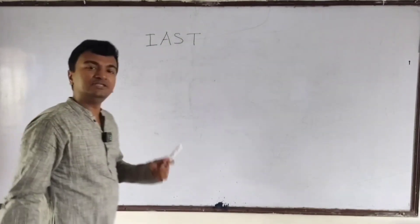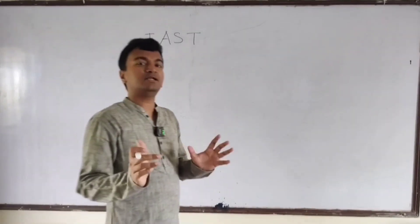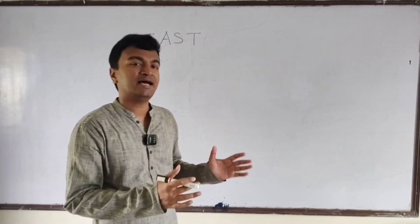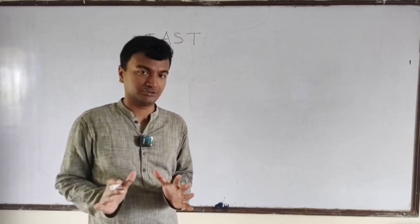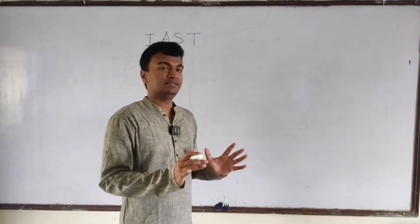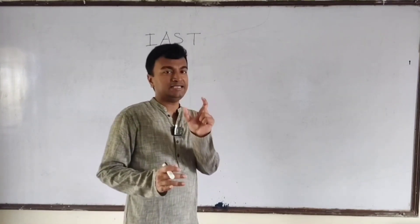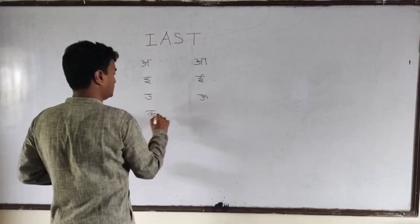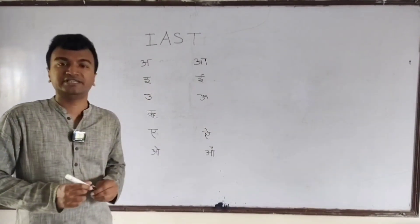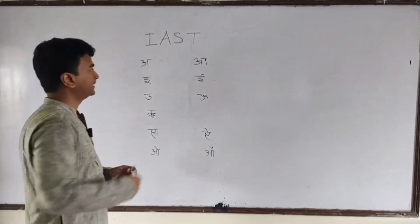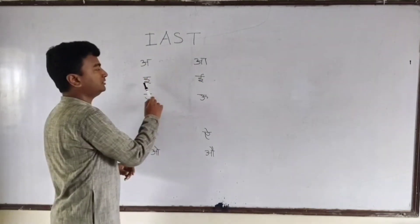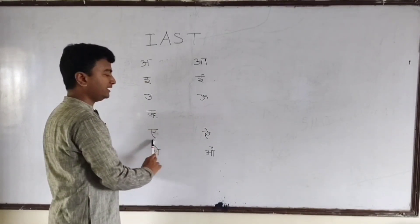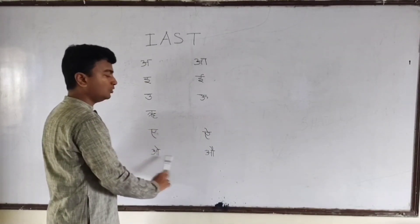This system has an elaborate guide to render every Devanagari letter with the help of Roman symbols. There are several letters in both the vowel and consonant portions of the Devanagari script. The vowels of the Devanagari alphabet are: a, ā, i, ī, u, ū, ṛ, e, ai, o, and au.